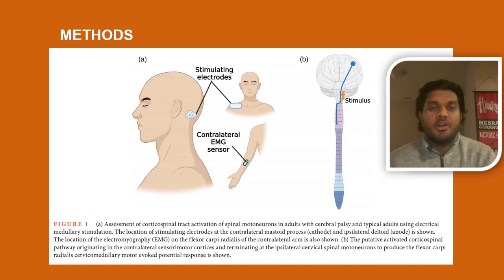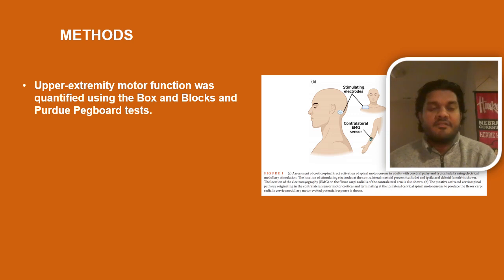For the methodology, we are stimulating the pathways connecting the sensory motor cortex with the spinal cord, and particularly, we're stimulating at the cervical medullary junction — the place where the pathways emerge out of the brain and into the spinal cord. We're using electrical stimulation and recording our responses using an EMG sensor placed on the contralateral flexor carpi radialis muscle for testing wrist flexion. We also quantify upper extremity motor function using the box and blocks test of manual dexterity as well as the Purdue pegboard test.